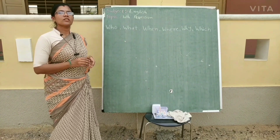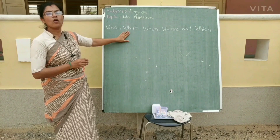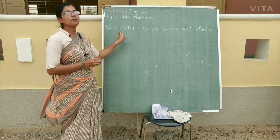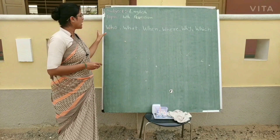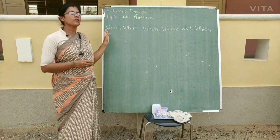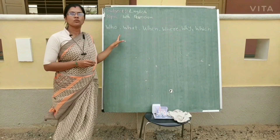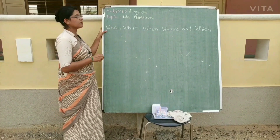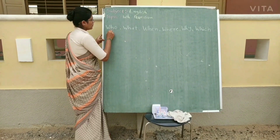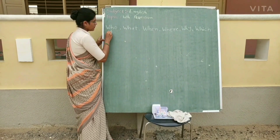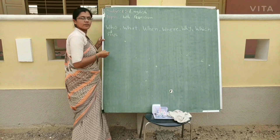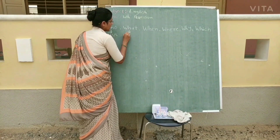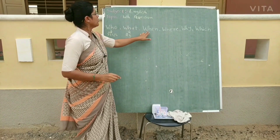WH questions are: who, what, when, where, why, and which. આ બધાં WH questions છે. આ બધાની મદદથી આપણે question પૂછી શકીએ. સૌ પ્રથમ આપણે એક એક ને સમજીશું.